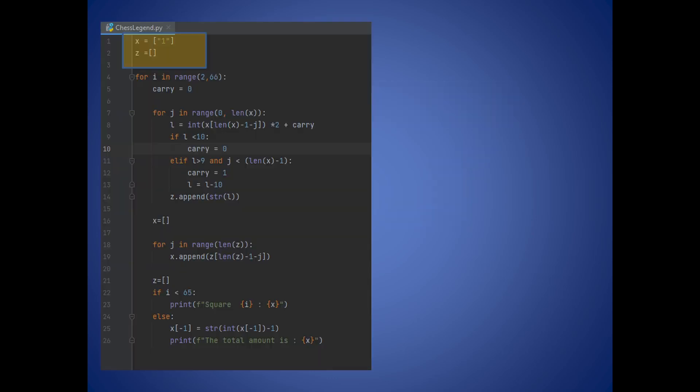First we're going to create two lists, x and z. x will contain number 1 as a string, the amount in the first chess square. Then we're going to create the for loop starting from the second square to the last 64th square. We include 65 so that we are able to calculate the total amount using the formula we mentioned before.